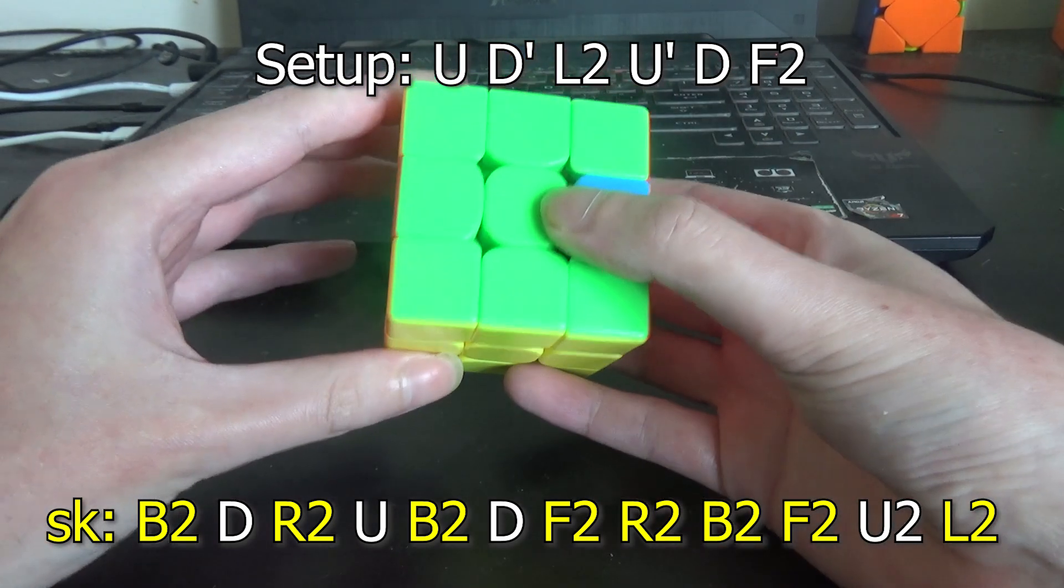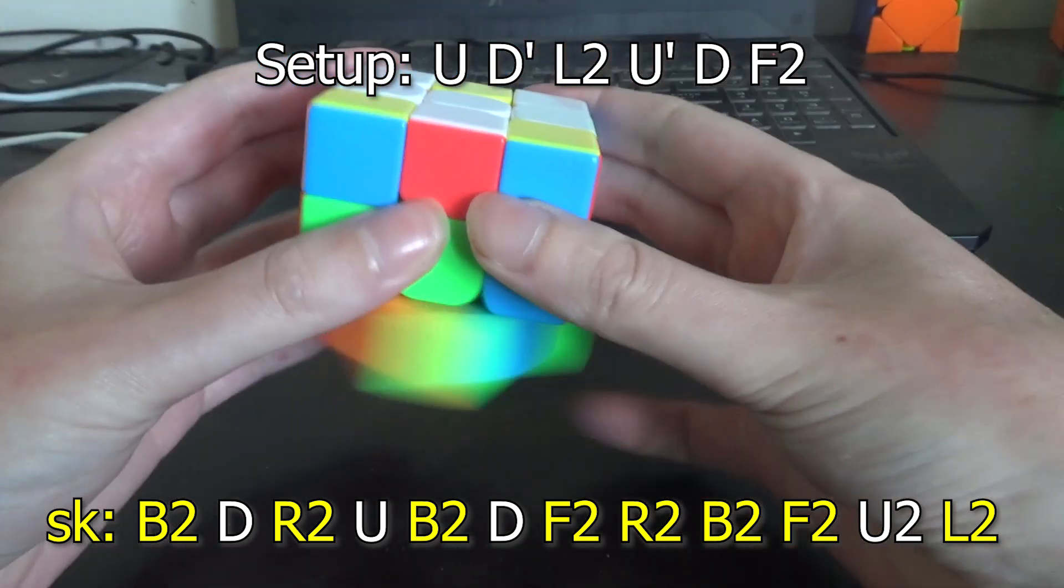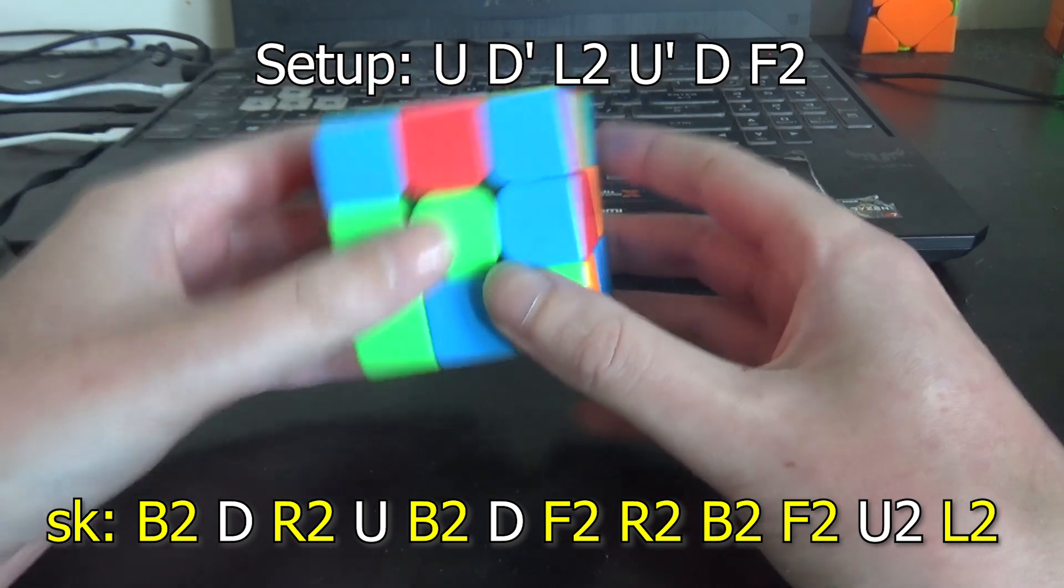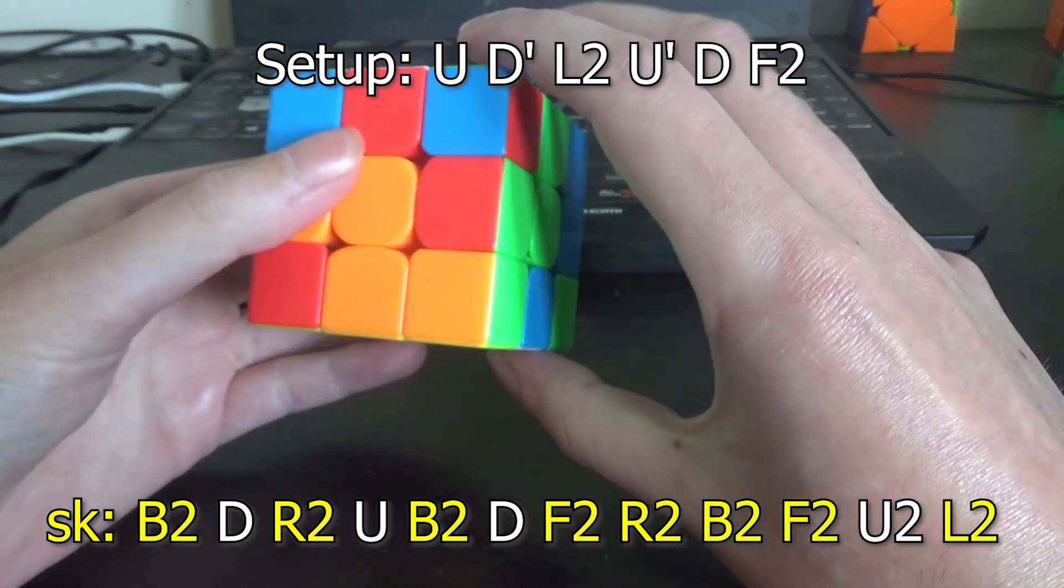Just trying every combination of widenings that leaves the center solved and seeing if any of them solves the case. So we're going to undo to the first D move. We're going to insert a slice at the first D, meaning instead of D we do DW, do an R2.